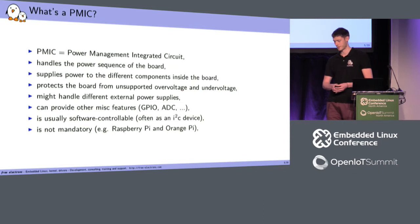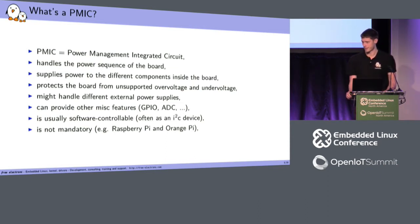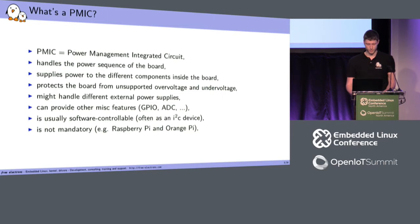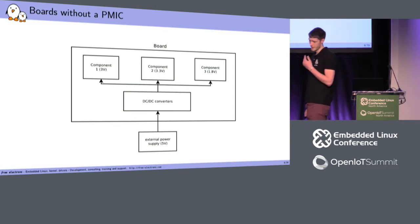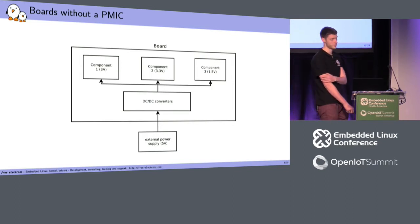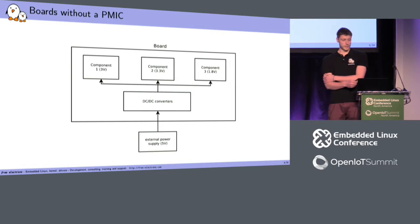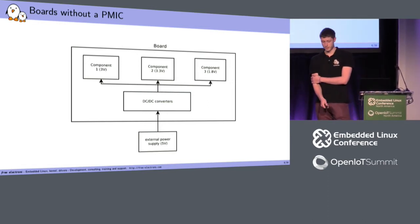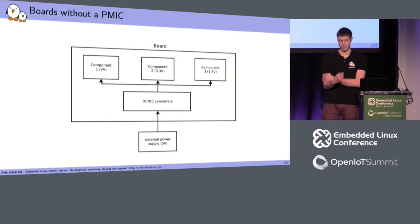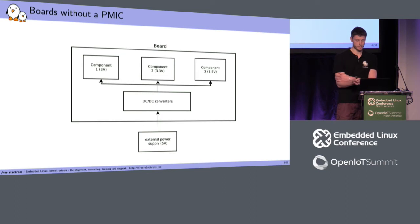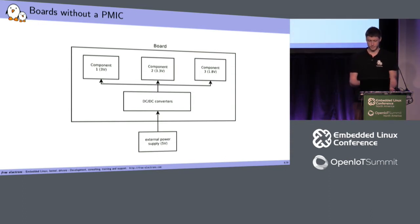The PMIC is not mandatory. On the Raspberry Pi or the Orange Pi, it's not there — you cannot have multiple external power ports applied at the same time or you'll just burn your Raspberry Pi. You can do a successful board without one. Here we have a board without a PMIC: you have three different components requiring different input voltages — 3.3 V, 1.8 V — your external power supply supplies 5 V, and it goes through DC-DC converters, or regulators. Everything is hardware hard-coded, and it just works.